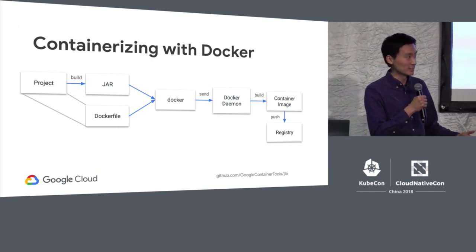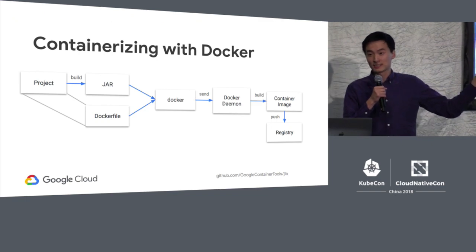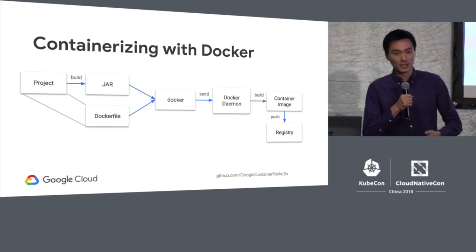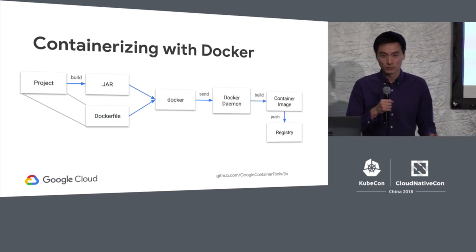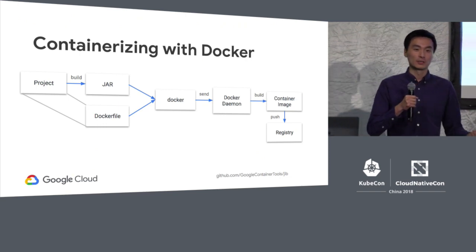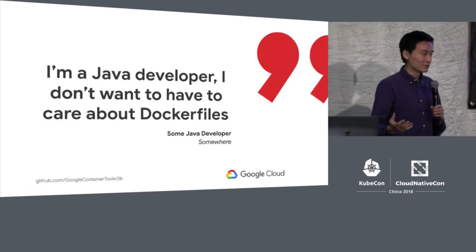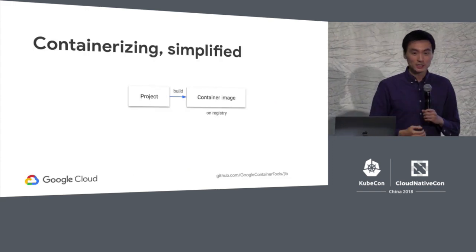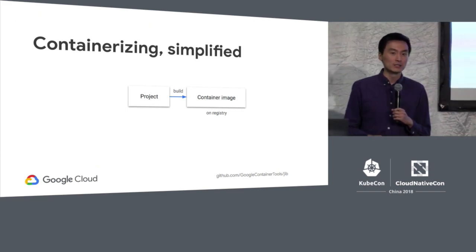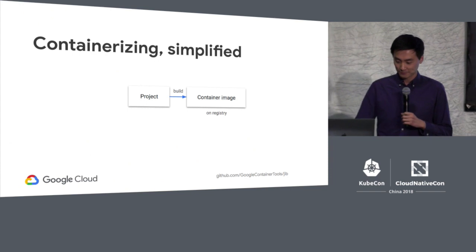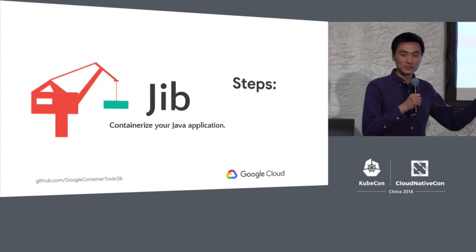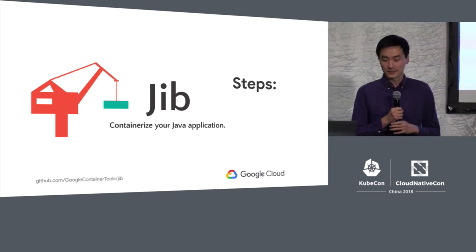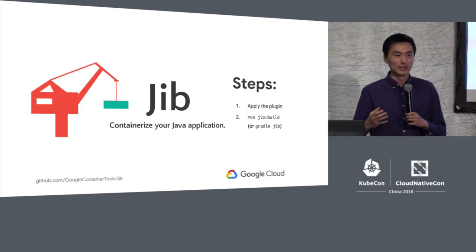When containerizing with Docker, there are many steps between your project and your container image on your registry: build your jar, write your Dockerfile, send them via Docker client to Docker daemon, the daemon runs a container to build the image, then Docker push sends it to the registry. However, as Java developers we don't want to care about Dockerfiles. The containerization process should be as simple as having a project, running a build, and having your container image on your registry. That's why we built Jib — as plugins for Maven and Gradle so you can containerize an existing project in two easy steps: apply the plugin and run your build.